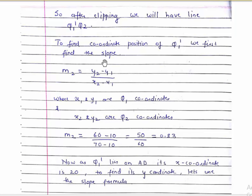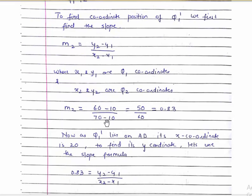We'll find the slope m2 = (y2 - y1) / (x2 - x1) where x1, y1 are Q1 coordinates and x2, y2 are Q2 coordinates. So slope = (60 - 10) / (70 - 10) = 50/60 ≈ 0.83.